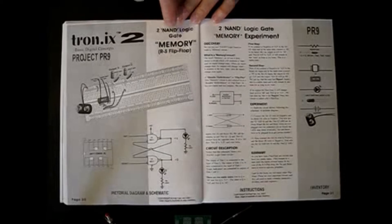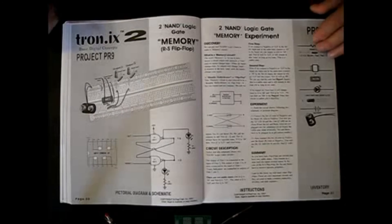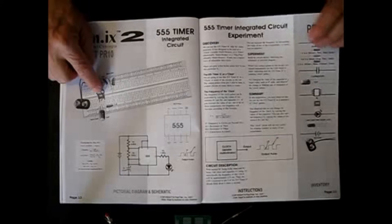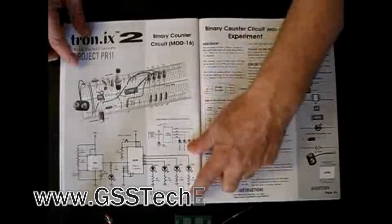Next one, we take two NAND gates and we make a memory. It's referred to as an RS flip-flop. This is a circuit that will remember. Computers all use these kinds of circuits for their memory. The next one, we introduced again, the 555 timer, like from Tronix One Lab, and we show you how it's used in this lab.